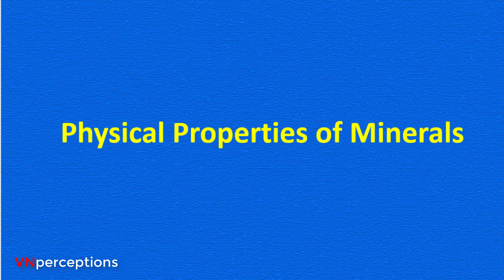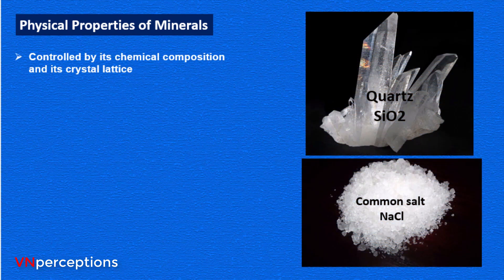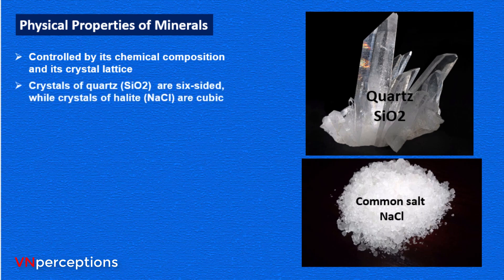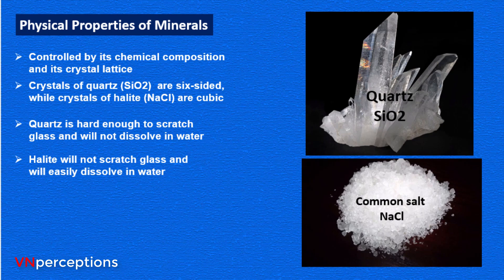Now, what are the physical properties of minerals? The physical properties of a mineral are controlled by its chemical composition and its crystal lattice — that is, the three-dimensional geometric patterns in which atoms are arranged and bonded together. It is no coincidence that crystals of quartz are six-sided while crystals of halite are cubic; this is because of the geometry of their crystal lattice. Quartz is hard enough to scratch glass and will not dissolve in water to any visible extent, whereas halite will not scratch glass and will easily dissolve in water. These differences are due to different chemical compositions of the minerals.